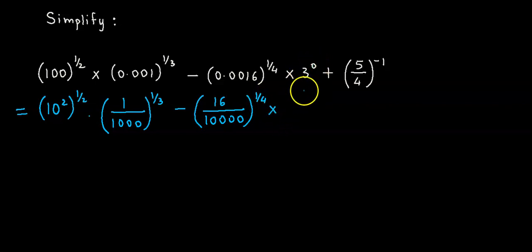Now 3 raised to 0 is of the form a raised to 0. So a raised to 0 is 1, therefore 3 raised to 0 will also be 1. Plus, if you take the reciprocal over here, the sign of the power changes. So this becomes 4 upon 5 raised to 1.